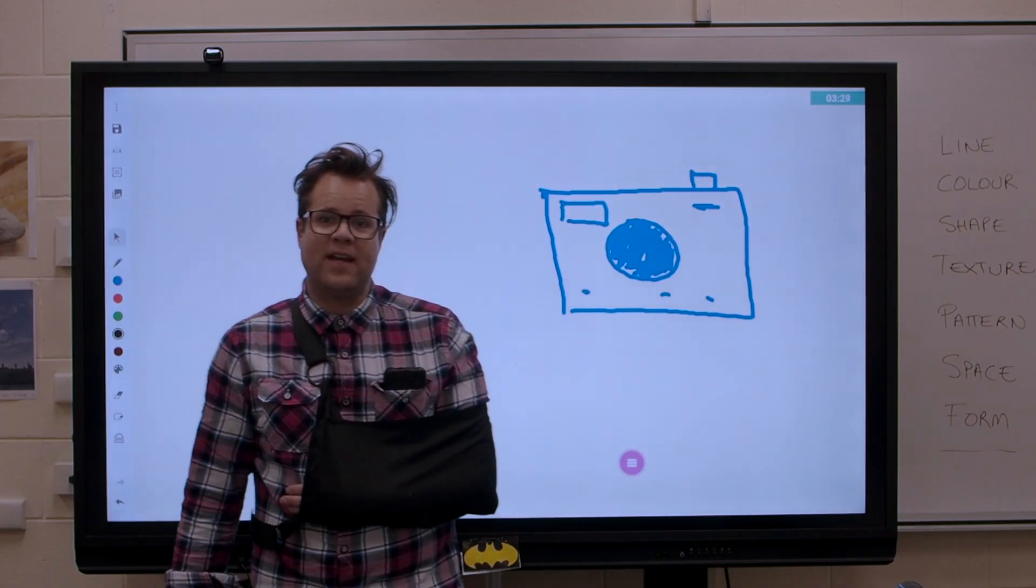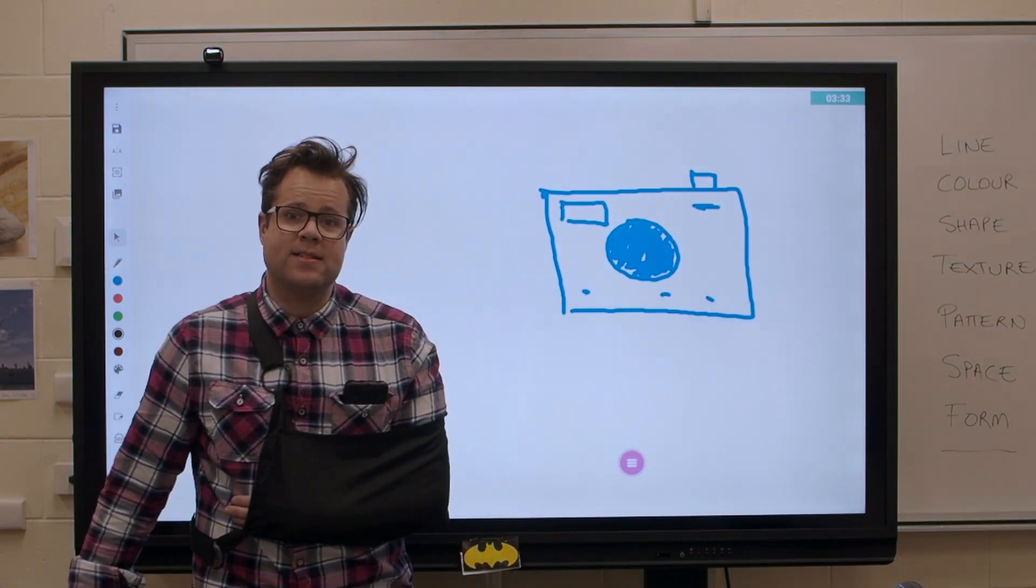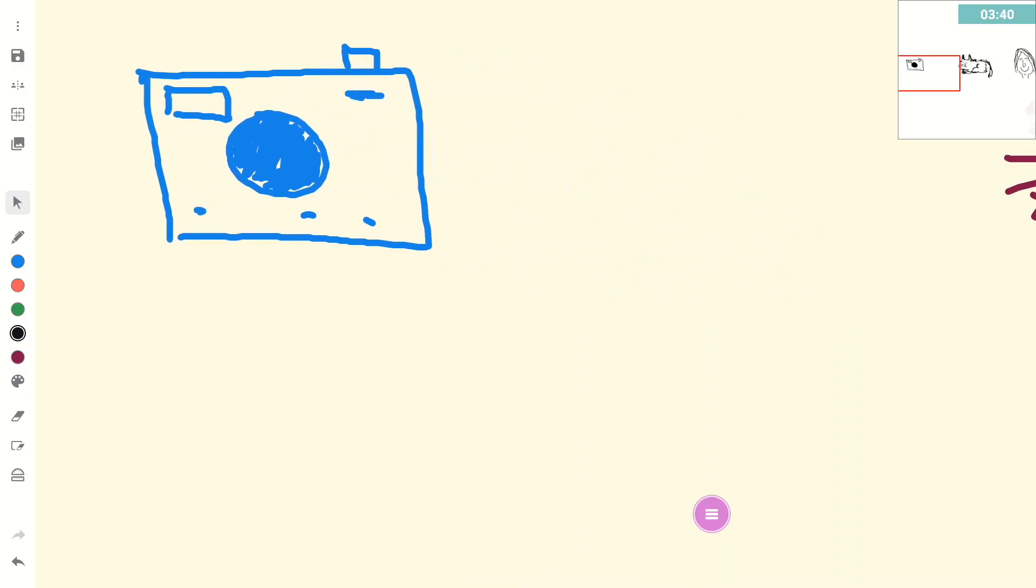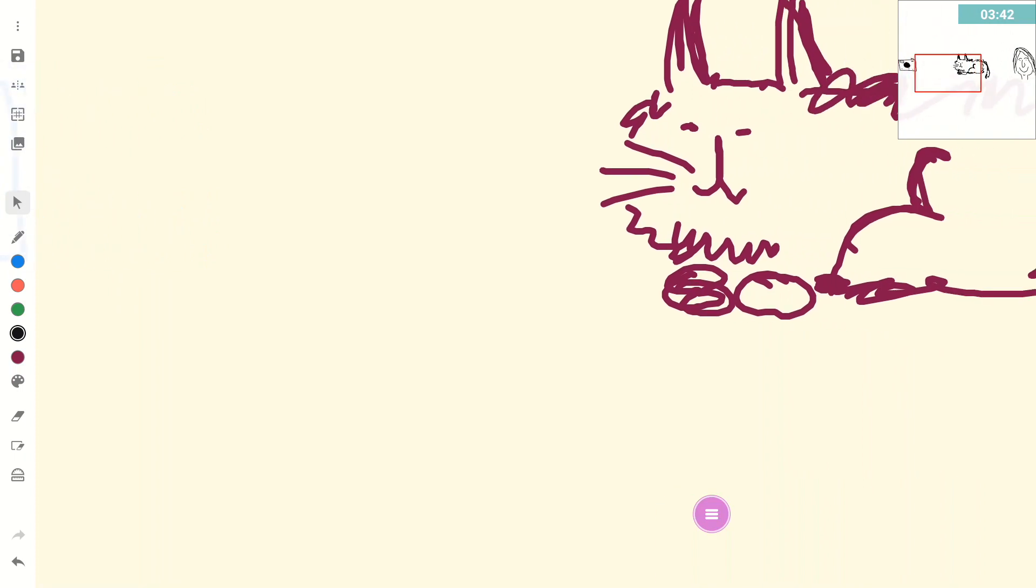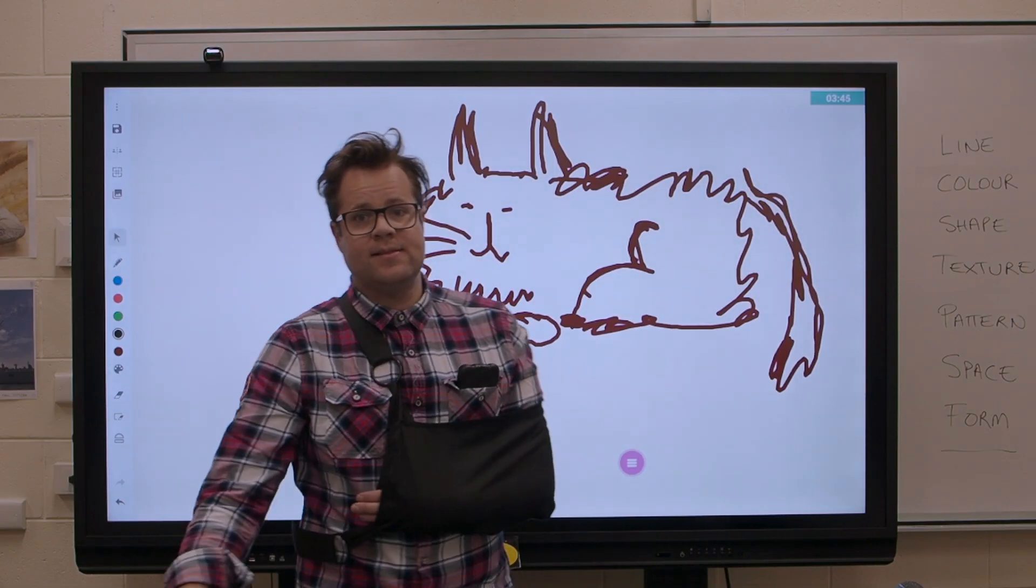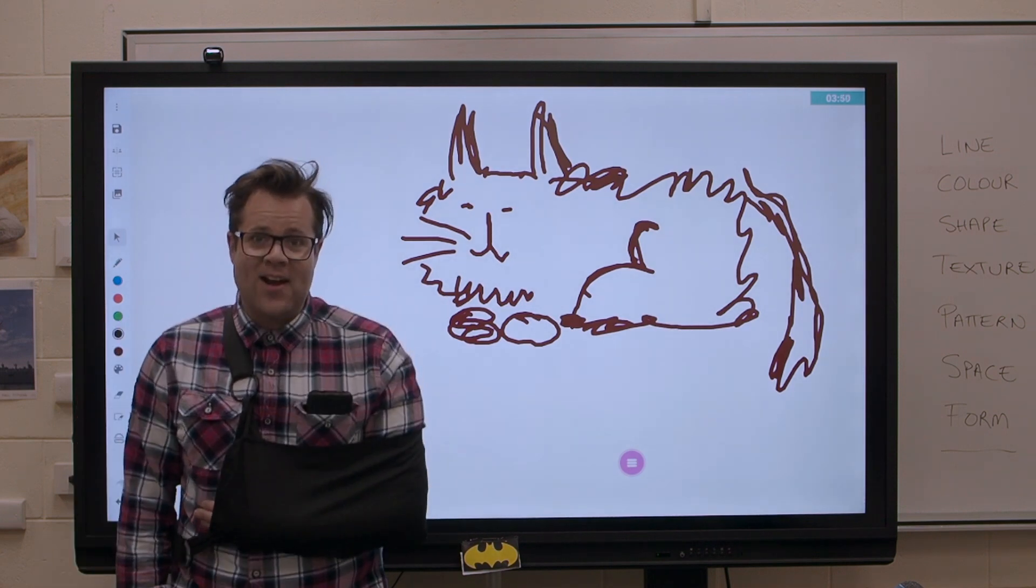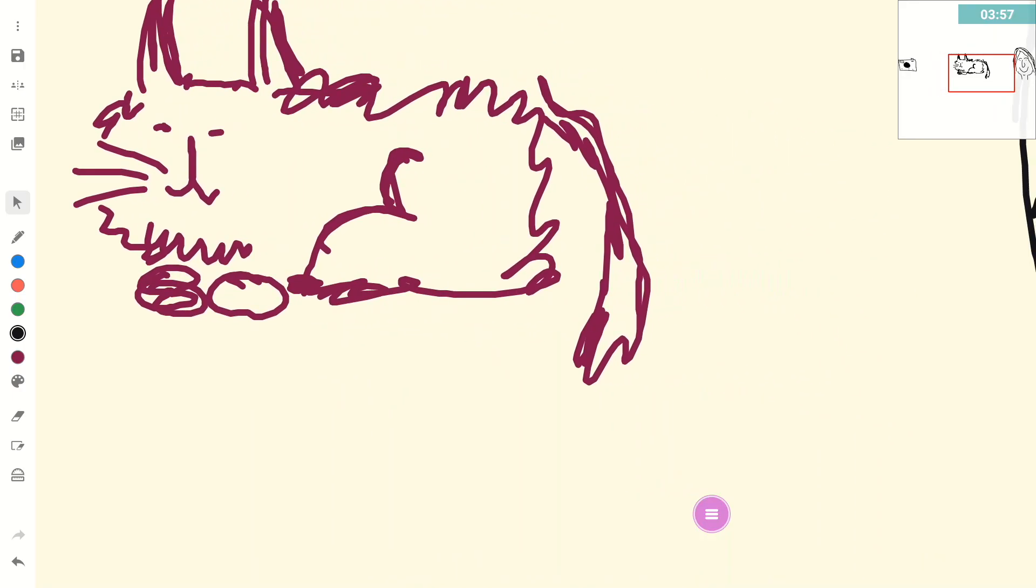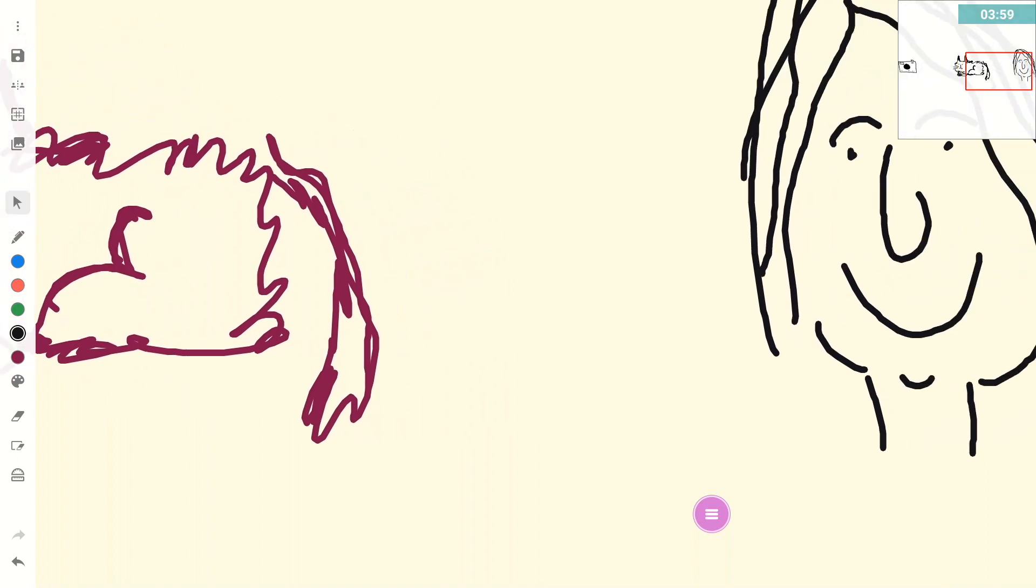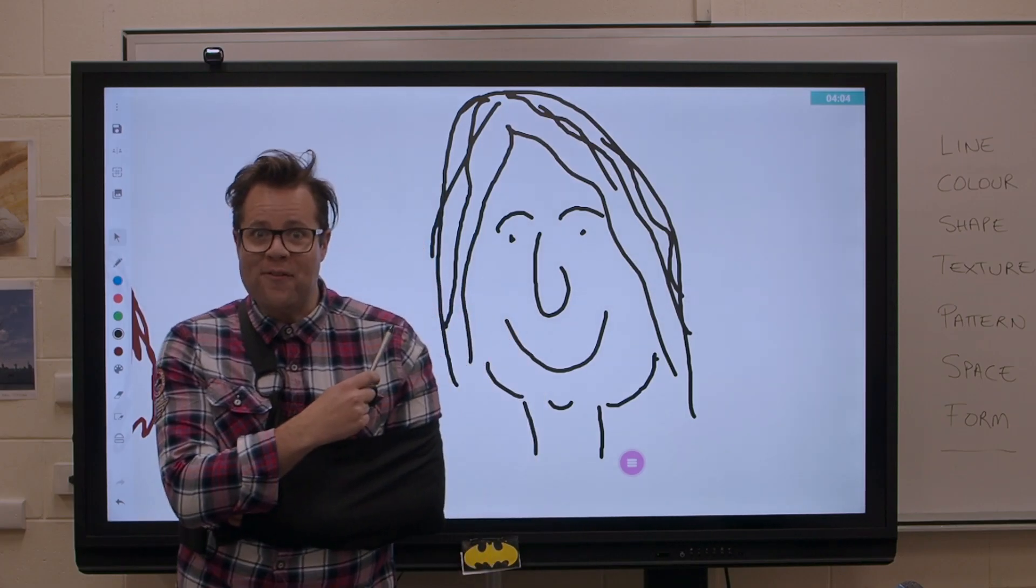That's my picture of a camera that took me 10 minutes. I need help. Check this out. This is my cat. I've had my cat for eight years. Okay, this is as close as I can get. All right, you're still thinking, come on Ben, cats are hard to draw. What about this? This is my wife. That's not going to end well for me.